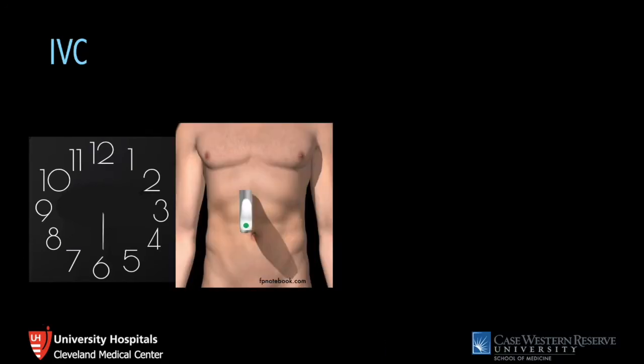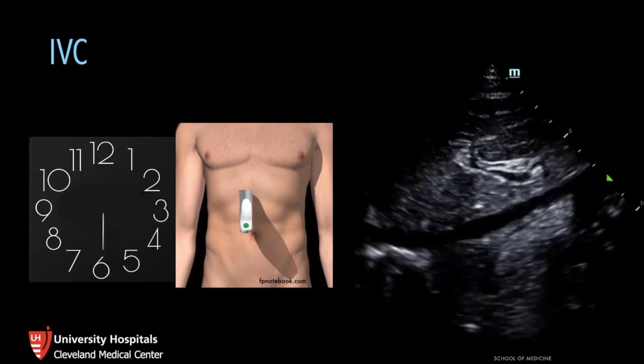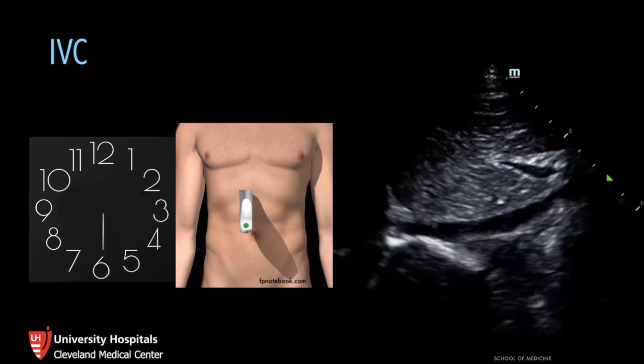The IVC is a great adjunct to your cardiac views. You can have your probe marker pointing toward the 12 o'clock position or the 6 o'clock position. I generally recommend the 6 o'clock position to keep a clockwise movement of the probe marker. You'll have the right atrium on the left side of the screen, the IVC coming in and dumping into it, the liver in the near field, and the hepatic vasculature draining into the IVC.